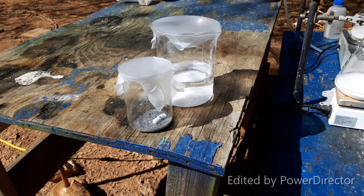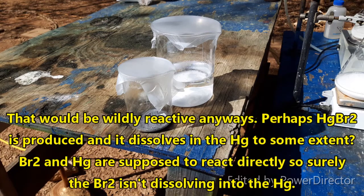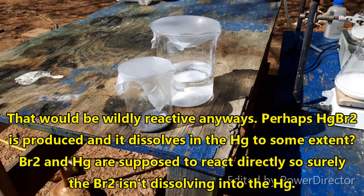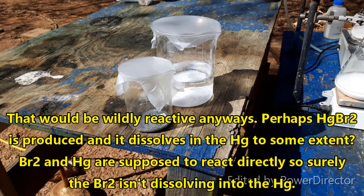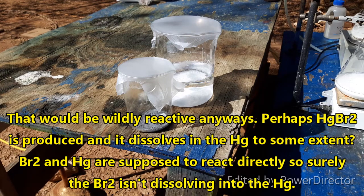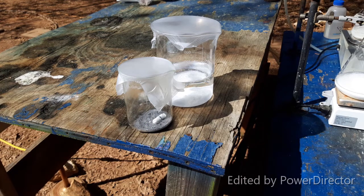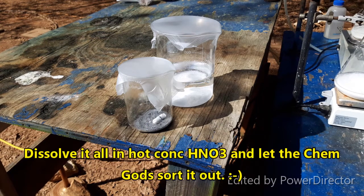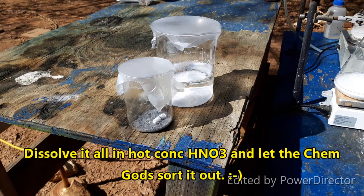I'm not exactly sure what was going on there. To my knowledge, mercury doesn't form an amalgam with bromine. I don't know. Maybe it dissolved mercurous bromide or mercuric bromide. I'm not really sure what happened there. I don't know. I'm gonna dissolve it all in nitric acid and let that all sort it out. Anywho, on with the prep.